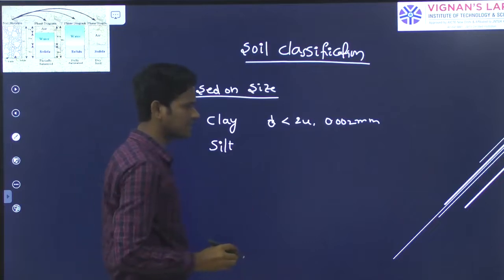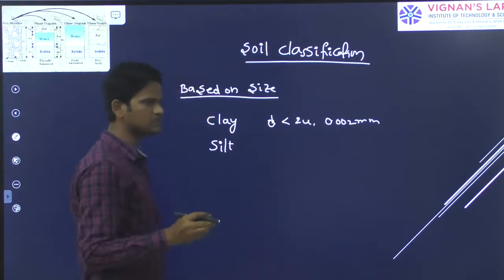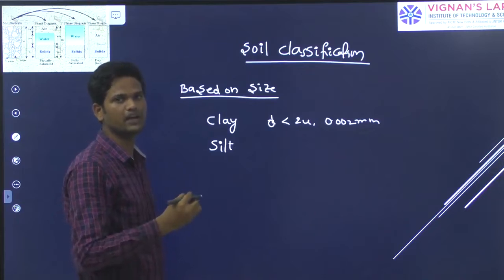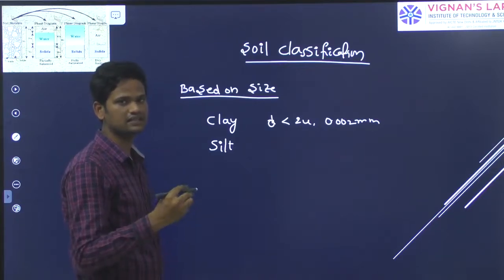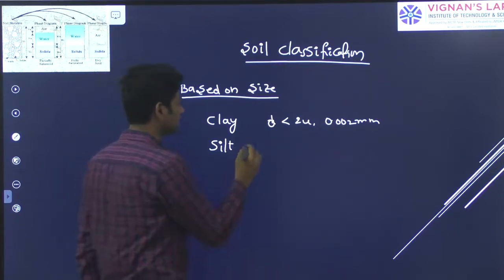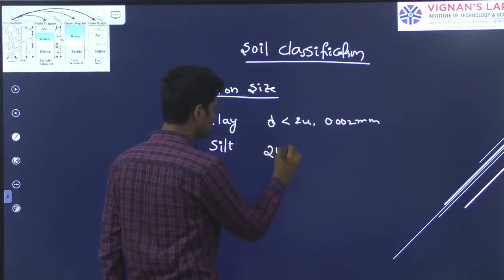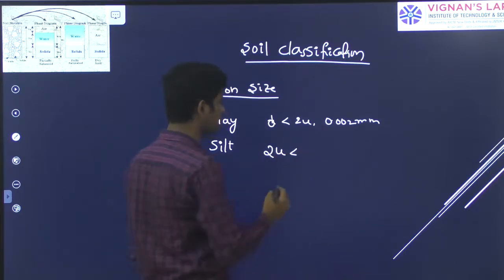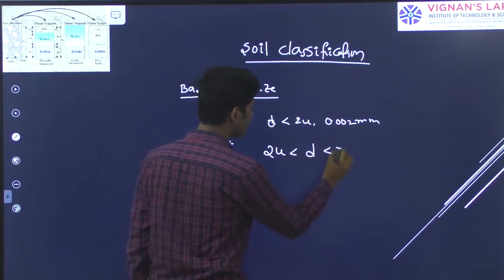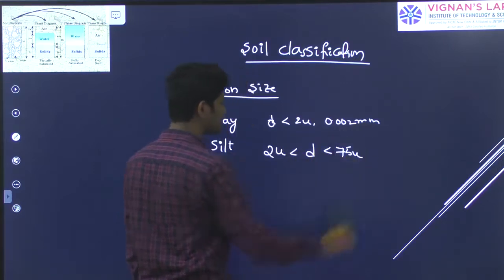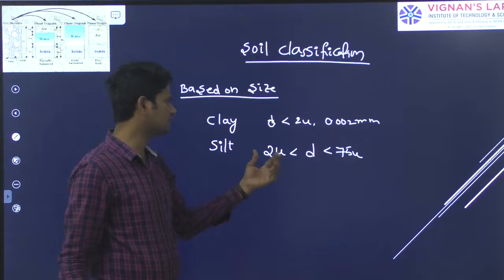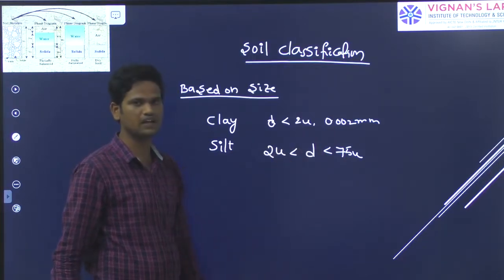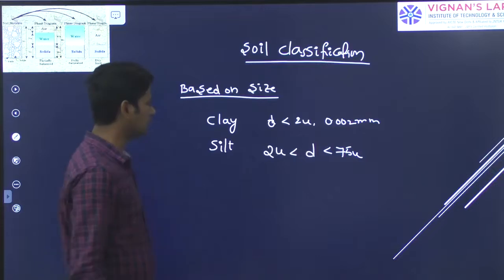The other type of soil is silty soil. The silty soil is the type where the particle size is greater than 2 microns and less than 70 microns in size. So the silty soil has size greater than 2 microns and the particle size less than 75 microns. The difference between these two ranges of soil particles is called silty soil.